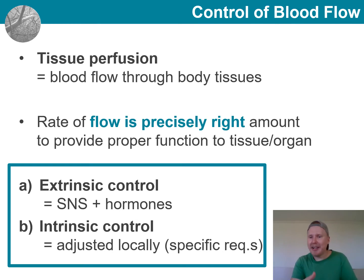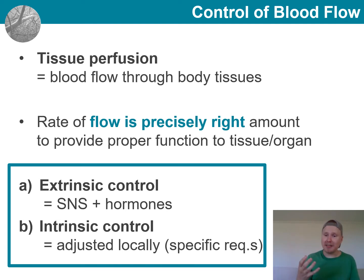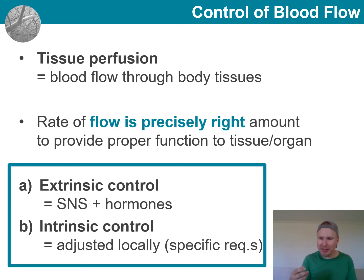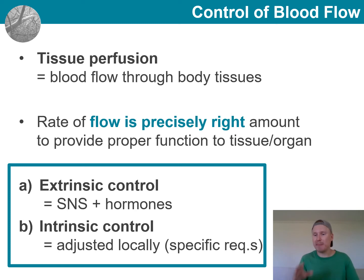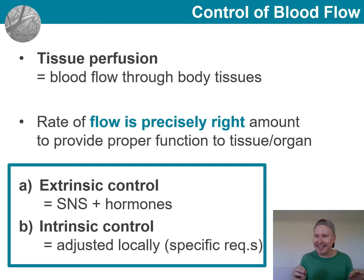Extrinsic controls rely on the sympathetic nervous system and hormones that control blood flow, and this level of control acts through the entire body. For example, the smooth muscle on the arterioles can be affected by the sympathetic nervous system and hormones to direct blood to or away from certain areas, depending on whether they need more or less blood flow. Intrinsic control is about responding to local needs through controlling capillaries — responding to specific tissue requirements at that site.